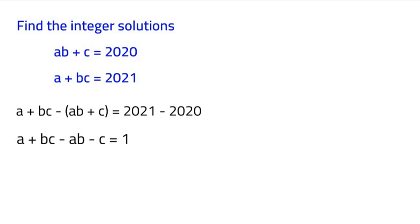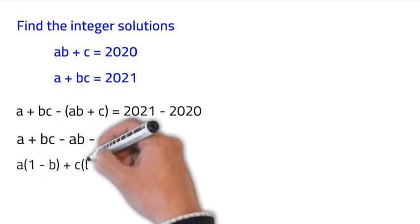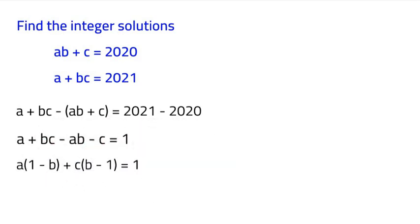Now that we have that, we can factor out an A and a C. If you notice, we have A and then we have a minus AB. So we can factor out an A, so it would be A times 1 minus B. Then we can also factor out a C, so we'll have C times B minus 1. That would look like this, which is equal to 1.